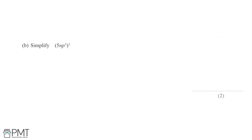In this part of the question, we're asked to simplify 5 lots of np cubed, and then that whole bracket is going to be cubed. In effect, this bracket is the same as writing 5 multiplied by n multiplied by p cubed, and then that whole thing cubed. This helps us make sure we know we're not adding or subtracting any terms. To cube this bracket, we basically have to cube each of the individual terms, raising each term to the power of 3.